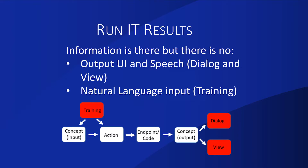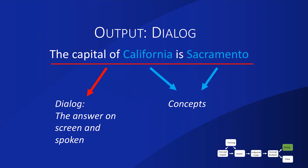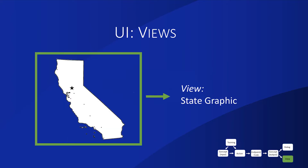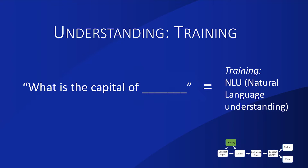What do we need to do? First, we need to create an output UI and speech. The output speech is what in Bixby we call a dialogue — both what Bixby speaks aloud and the header at the top of the screen. The view is the UI showing that state outline graphic. Then we have natural language input, which we call training, allowing us to speak to Bixby naturally. The dialogue output is 'the capital of California is Sacramento' — with two concepts: the input state concept California and the output capital concept Sacramento. Our view is a simple image — the state outline graphic.